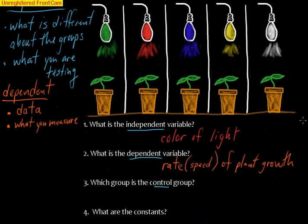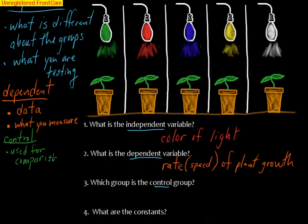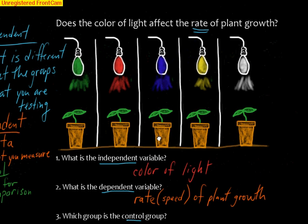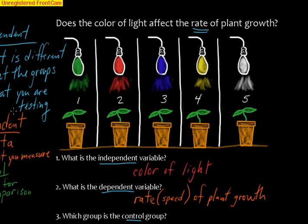Next term: what is the control group in this example? A control group is going to be used for comparison. It represents a normal situation — you need something to compare to in order to see what a normal plant would do in this experiment. Let's number the plants so we can refer to them: plant one, two, three, four, and five. If you're asked which one looks like the control group, you're probably thinking this looks like the normal situation used for comparison.